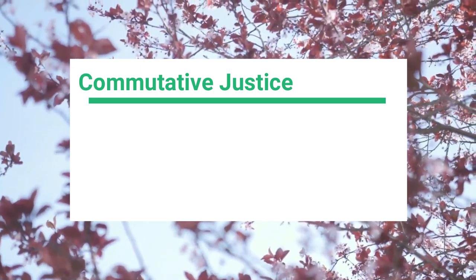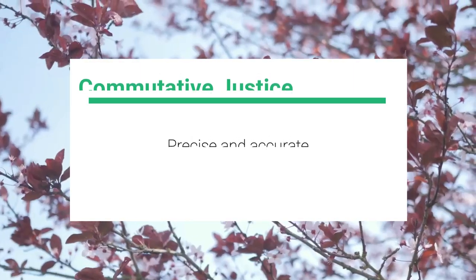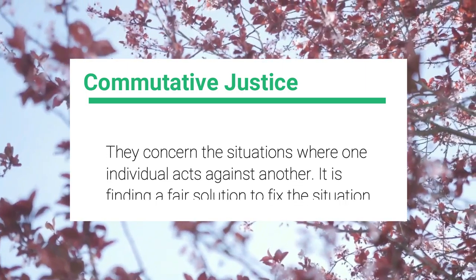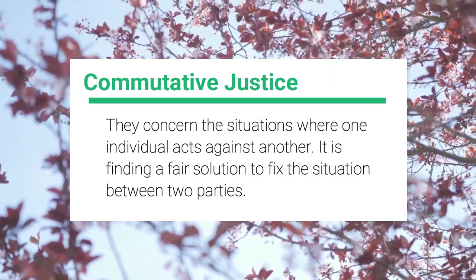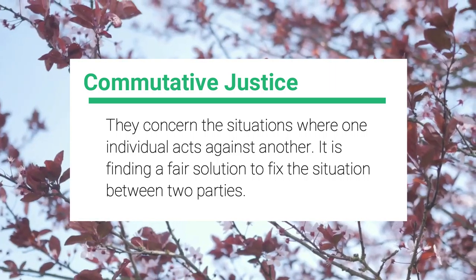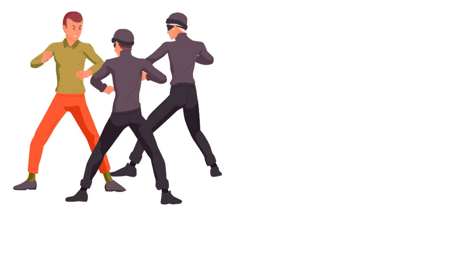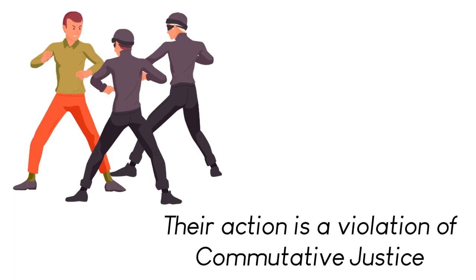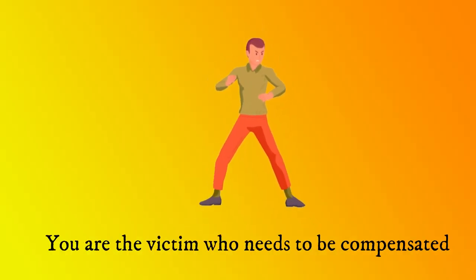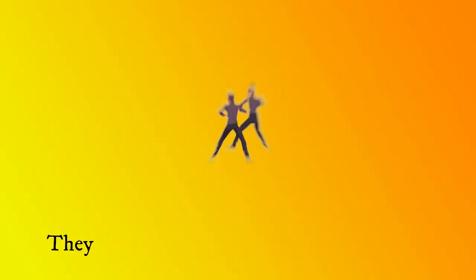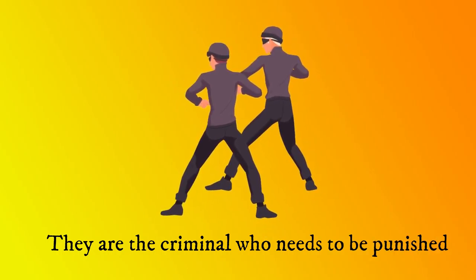The rules of commutative justice are precise and accurate. They concern situations where one individual acts against another — it is finding a fair solution to fix the situation between two parties. For example, if someone assaults you or steals from you, their action is a violation of commutative justice. The criminal and the victim are identifiable to everyone. You are the victim who needs to be compensated, and he or she is the criminal who needs to be punished.